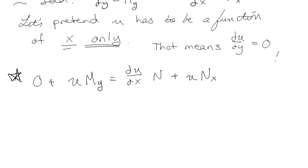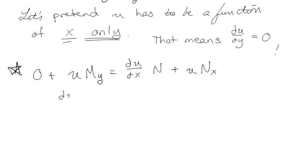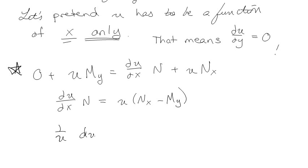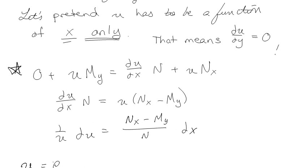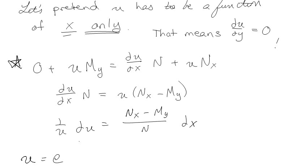Rearranging, we get Nx minus My on one side. This leads to: (1/u) du = (Nx - My)/N dx. So generally that means u is going to be equal to e to the integral of (Nx - My)/N dx.